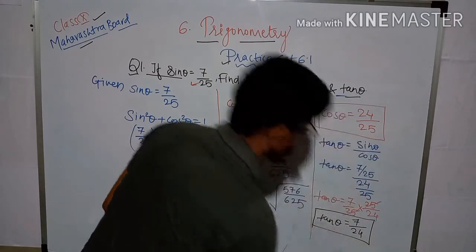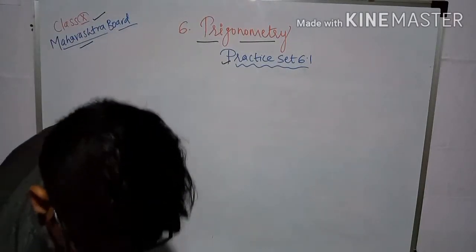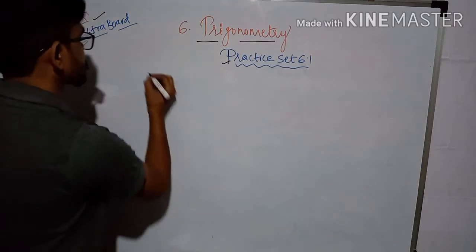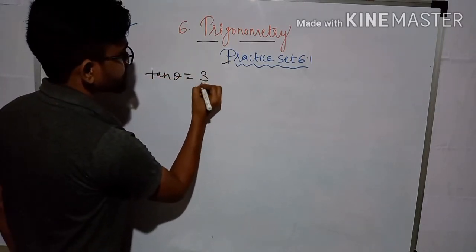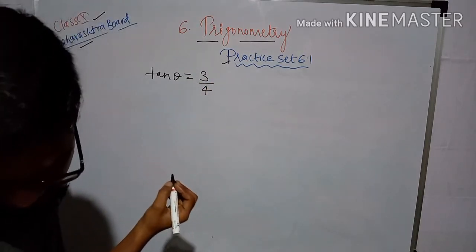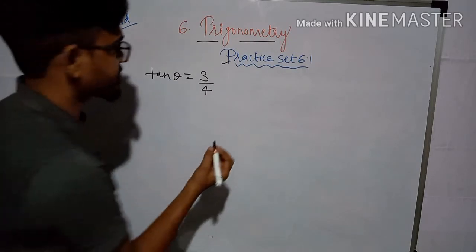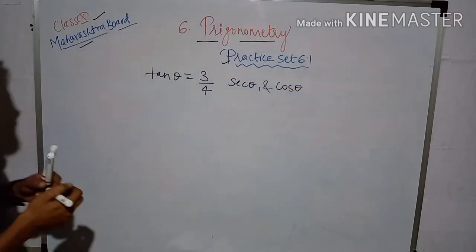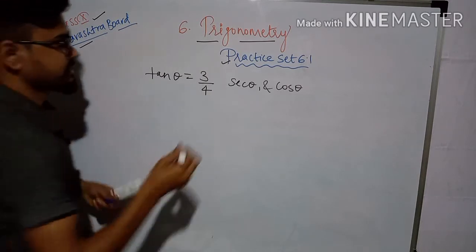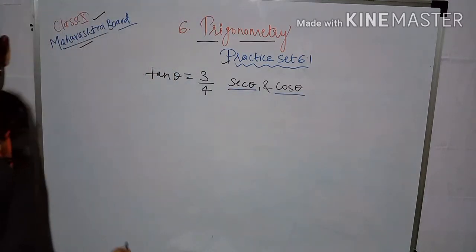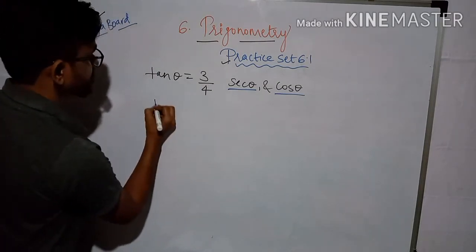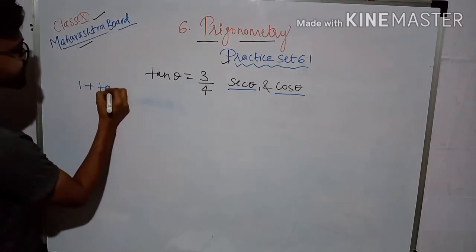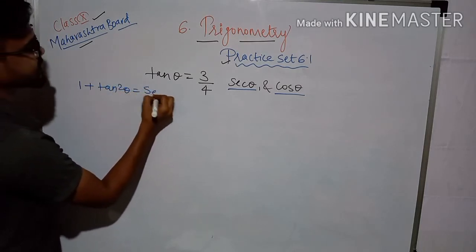Question number 2: If tan theta is equal to 3 by 4, find the value of sec theta and cos theta. We will use the identity: 1 plus tan square theta is equal to sec square theta.